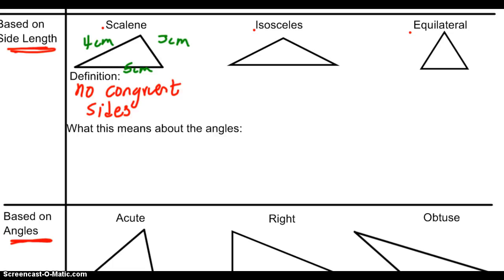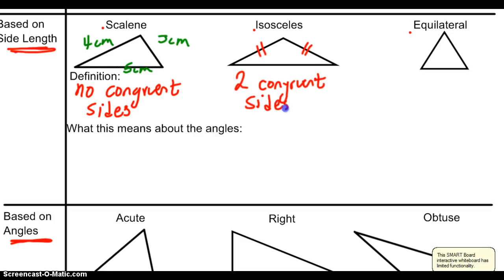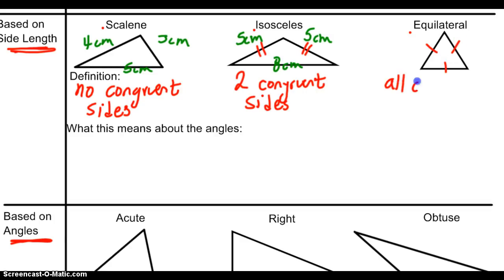On the other hand, an isosceles triangle has two congruent sides. So maybe this side and this side are congruent. If you make up side lengths for those, maybe they would be 5 centimeters, 5 centimeters, and 8 centimeters, something like that. We also have an equilateral triangle, and you might know that an equilateral triangle has all three congruent sides.